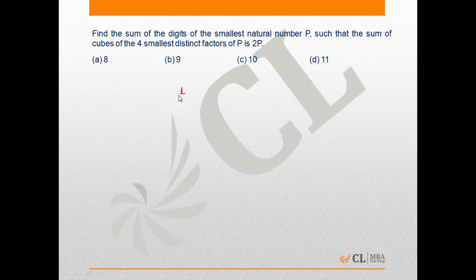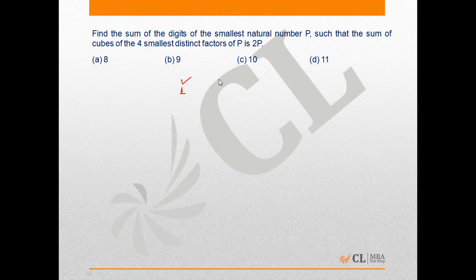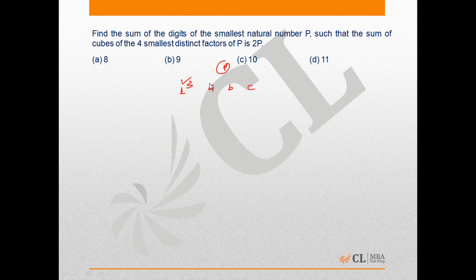We know that 1 is a factor of every natural number and it is the smallest factor as well. Suppose the other three smallest factors of P are A, B, C. As per the given condition, 1³ + A³ + B³ + C³ is given as 2P.